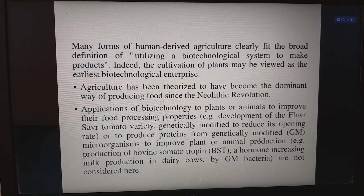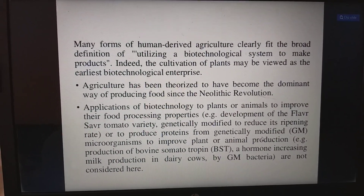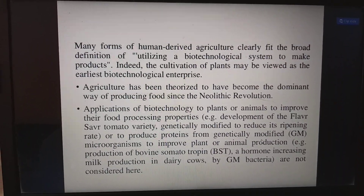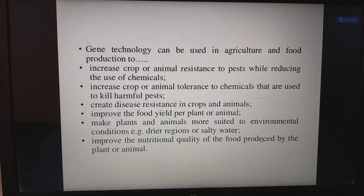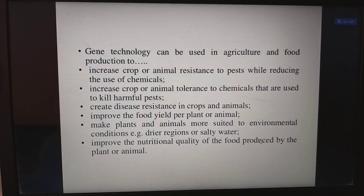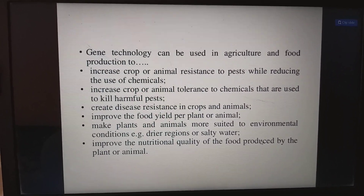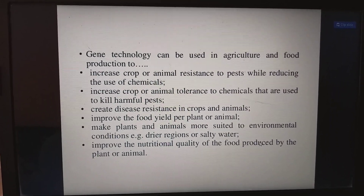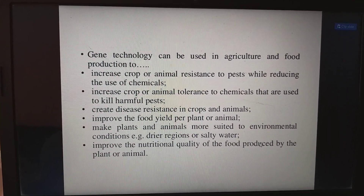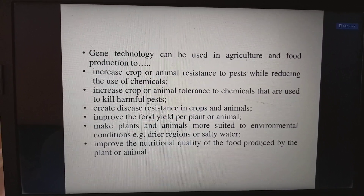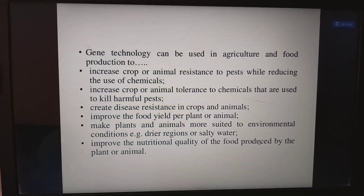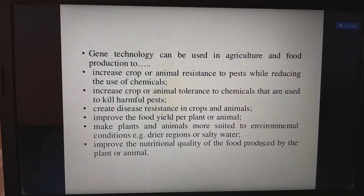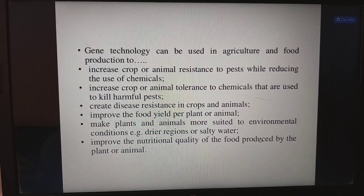An example is the production of bovine somatotrophin, a hormone that increases milk production in dairy cows, using genetically modified bacteria. Gene technology in agriculture can increase crop or animal tolerance to chemicals used to kill harmful pests, create disease resistance in crops and animals, improve food yield per plant or animal, make plants and animals more suited to environmental conditions such as drier regions or salty water, and improve the nutritional quality of food.